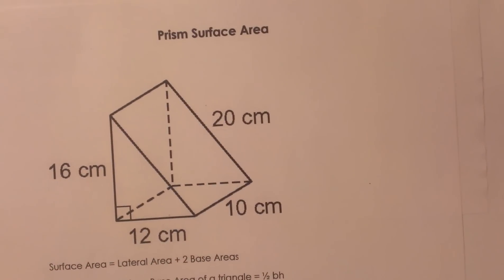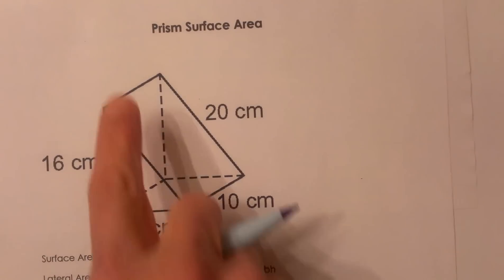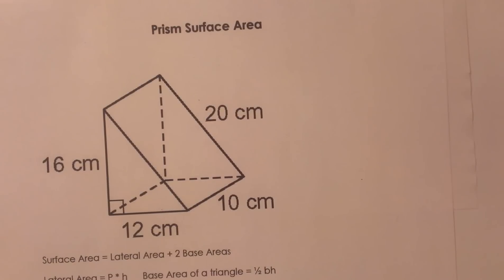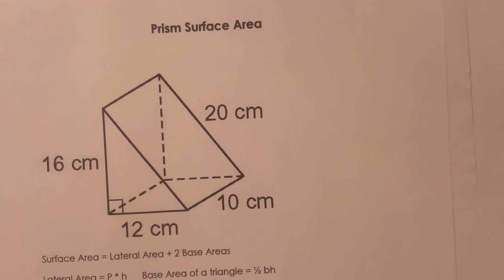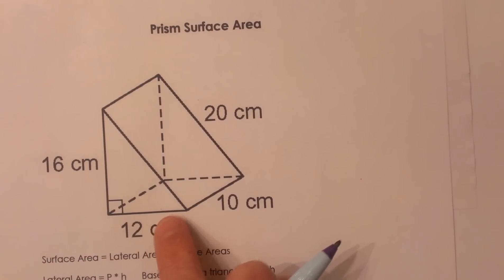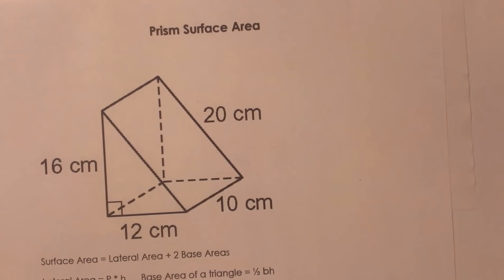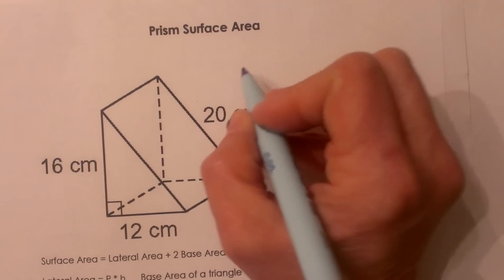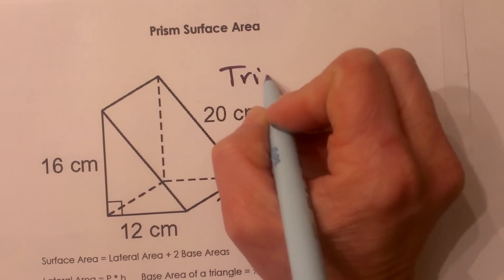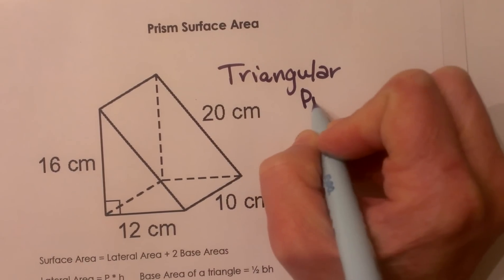Let's look at the surface area of a prism. Prisms are all different based on their base. Let's look at this prism. We have to decide what kind of base it has. What two sides are parallel to each other? It's the triangular sides. That means this is a triangular prism, and that's how you classify them. Write that down: triangular prism.